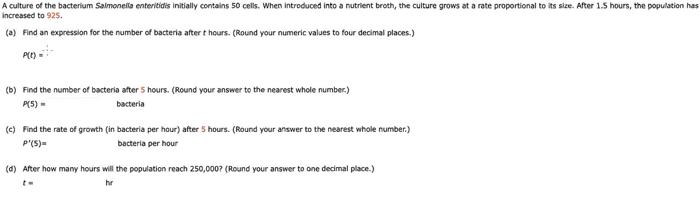Now I will show you how to answer question a: find an expression for the number of bacteria after t hours. We need to round to four decimal places. First we have the formula P(t) = P0*e^(rt).